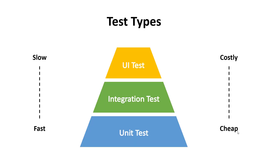If we look at this illustration, we can see we have unit tests and also other test techniques and types. At the bottom we have unit tests, then integration tests on top, and UI tests above that. We could also have beta tests and acceptance tests and so on. Looking at unit tests in particular, we can see on the left side that it is a fast way of doing testing — we can rather quickly create unit tests for our classes or methods, and we can run them rather fast.